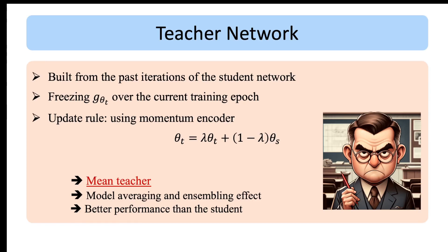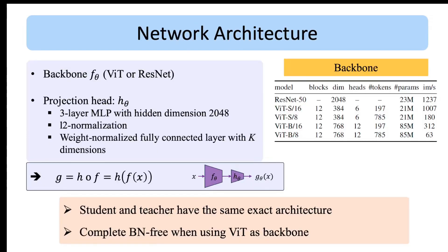The student and teacher networks share the same architecture: a backbone encoder and a projection head. The backbone can be either ViT or ResNet-50. The projection head is a three-layer MLP followed by L2 normalization and a weight-normalized fully connected layer, so the final model is G_theta = H(F(X)). Since ViT originally has no batch normalization, the authors also avoid batch norm in the projection head.